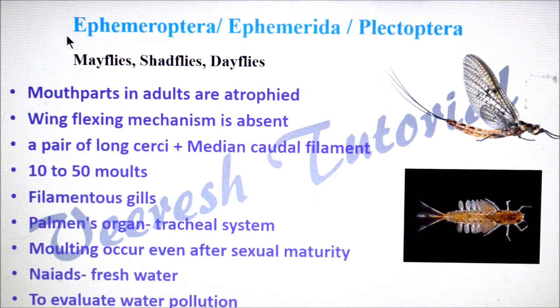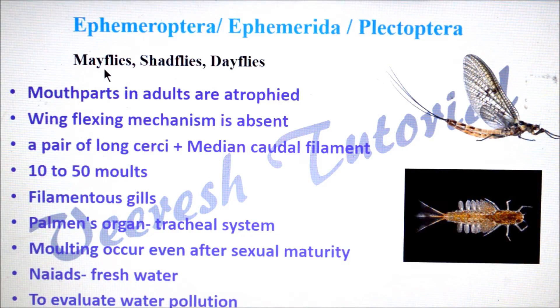The next order is Ephemeroptera. It is also called as Ephemerida or Plectoptera. Commonly called as mayflies, shad flies, or day flies, because the adult lives for only a day.